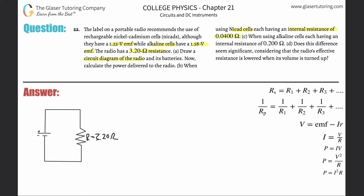Now we know the internal resistance of this battery — I'll call it little r — which is 0.04 ohms. We also know the voltage: the NiCad has an EMF (not terminal voltage, but EMF) of 1.25 volts.